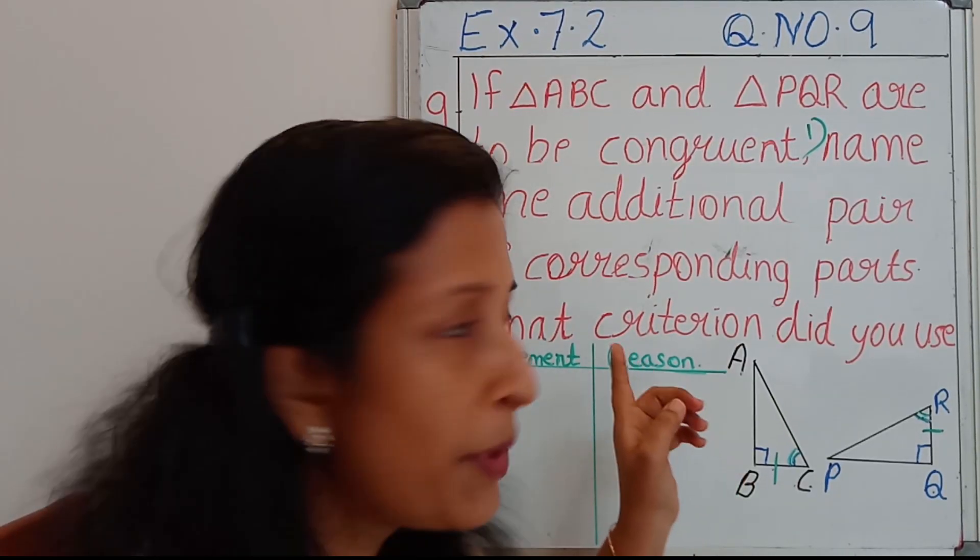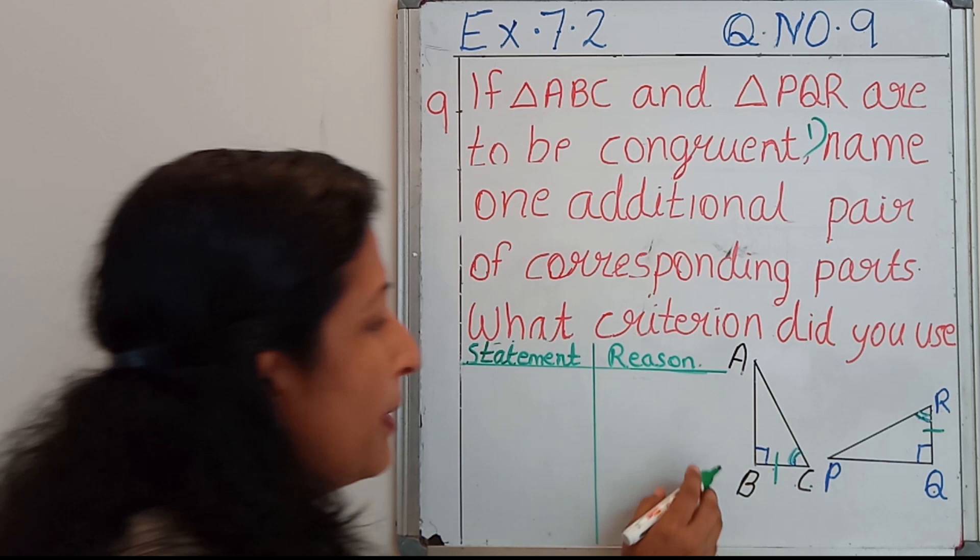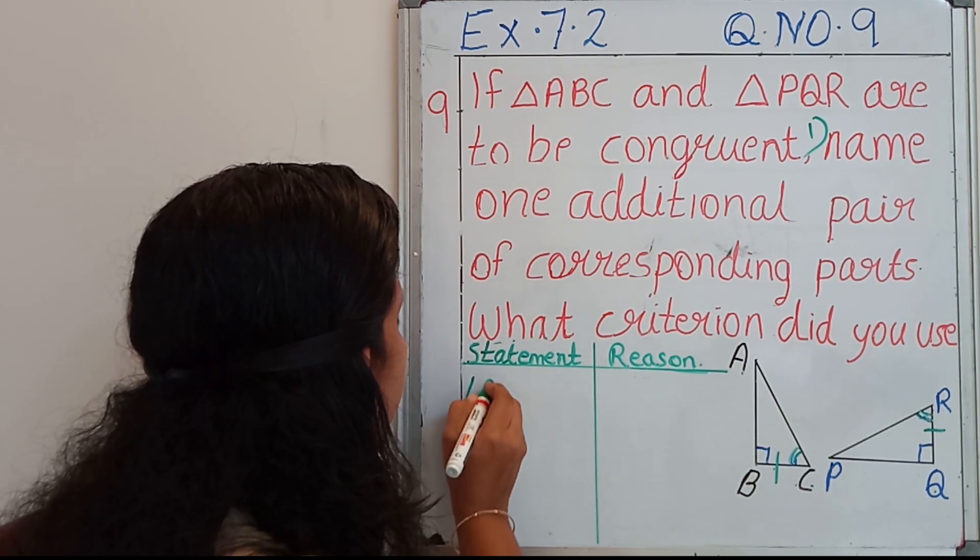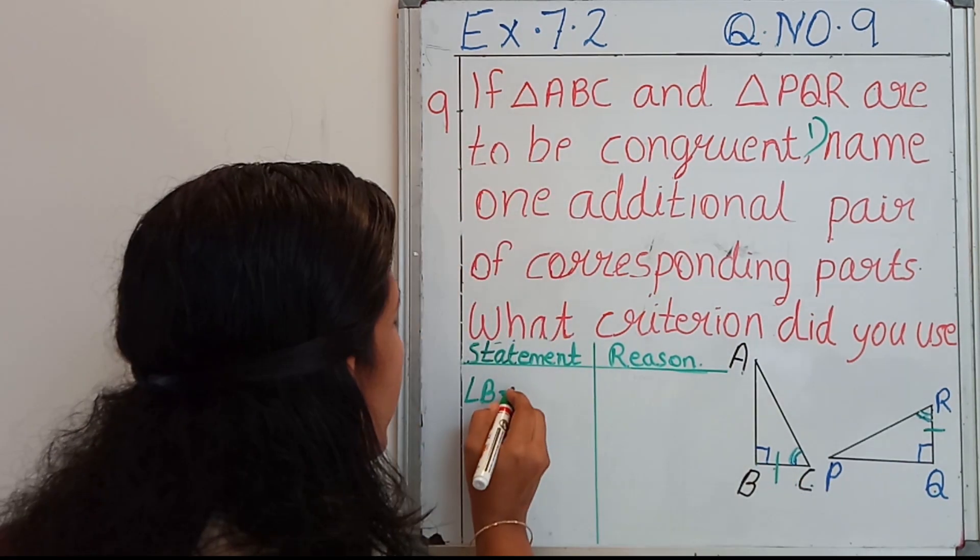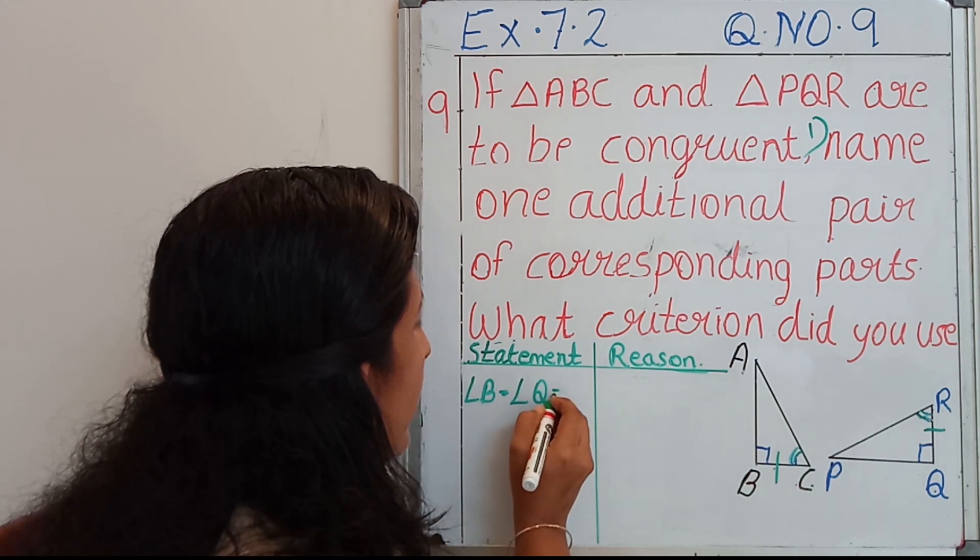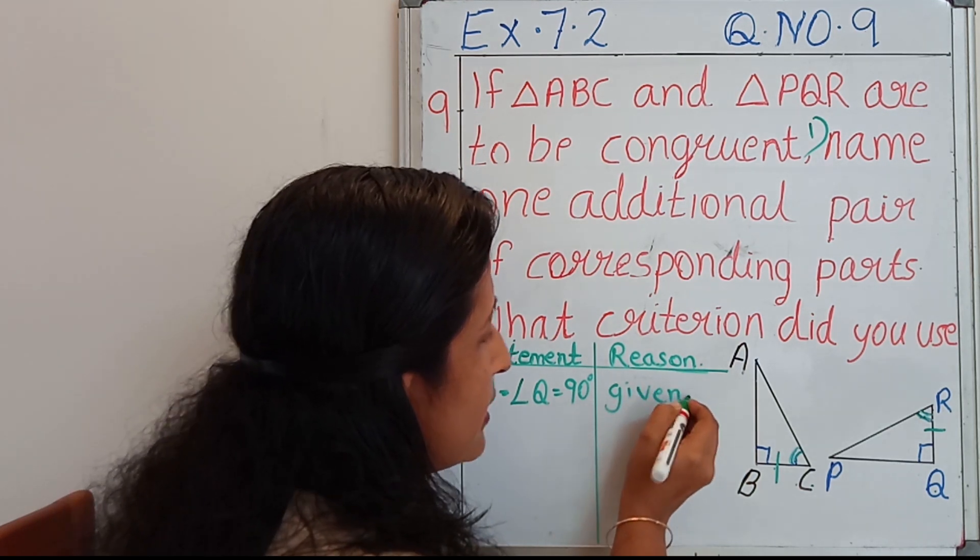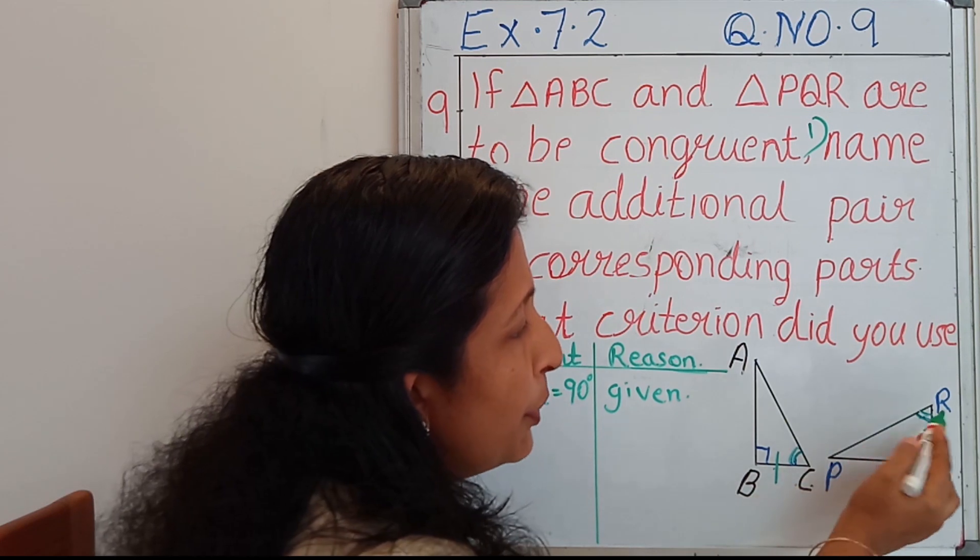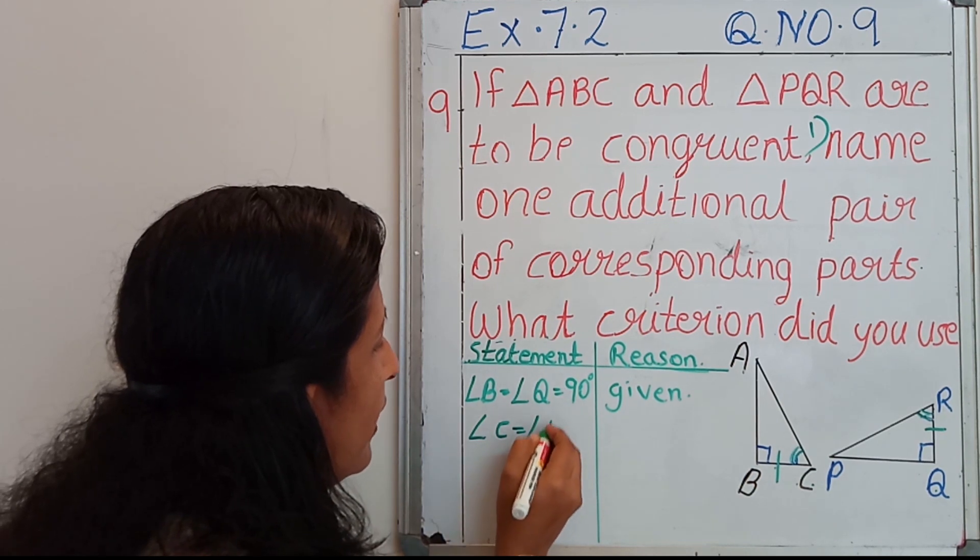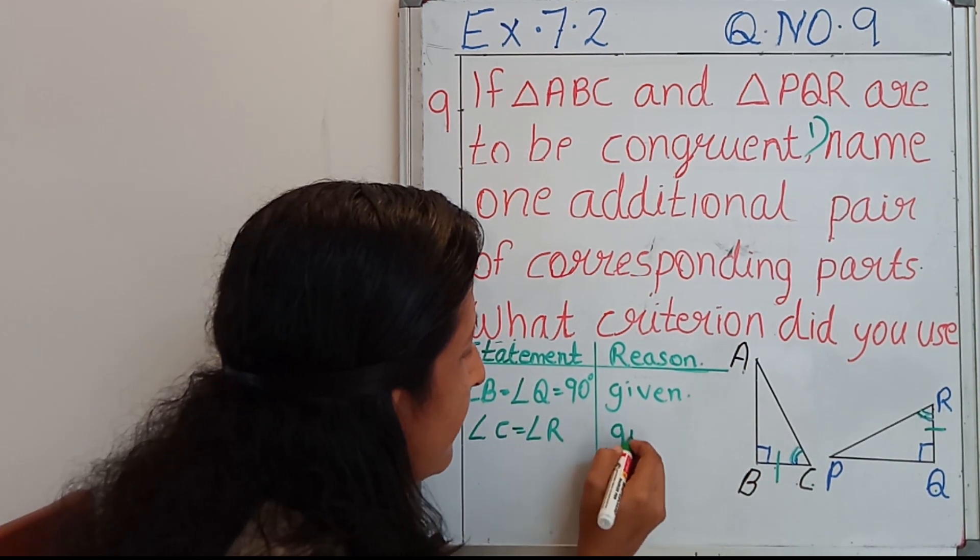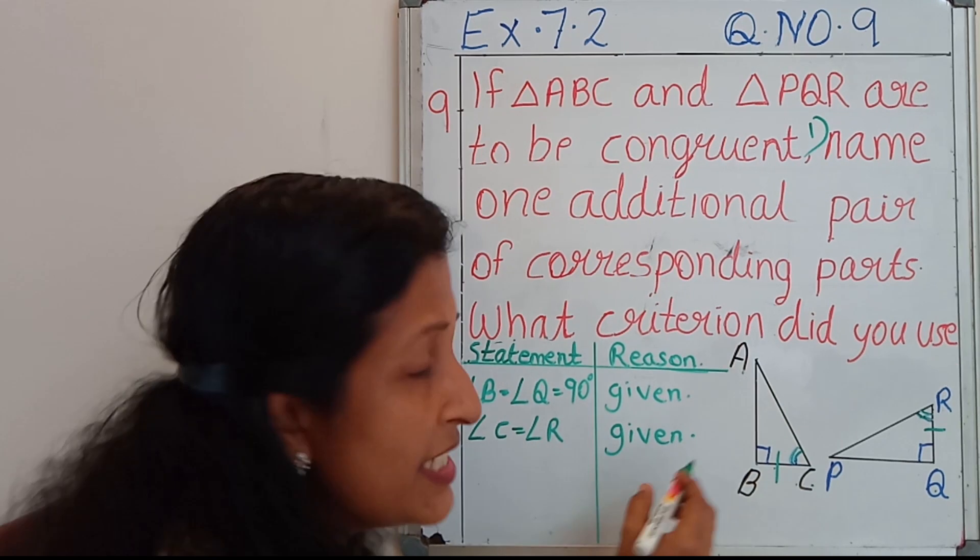Here I am going to write down the statement and reason, and after that I will prove the congruency of these two triangles. First statement they have given: angle B is a right angle and angle Q is again a right angle. So angle B equal to angle Q equal to 90 degrees. What is the reason? Given data. Then angle C equal to angle R, angle C equal to angle R, again given.